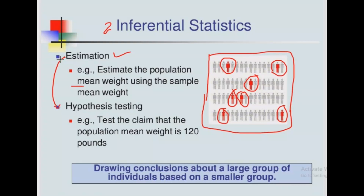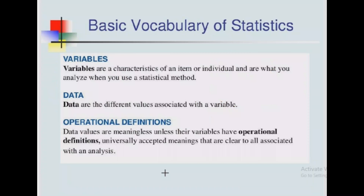The first type of inference is about estimation, and the second is about making or testing a hypothesis. When we estimate the population mean we are doing the inferential part. For example, to test the claim that the population mean weight is 120, we use test statistics to reach a conclusion on whether we accept the null hypothesis or fail to accept the null hypothesis. Drawing conclusions about a large population based on a smaller group is what we call inferential statistics.